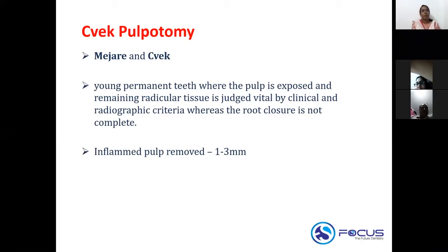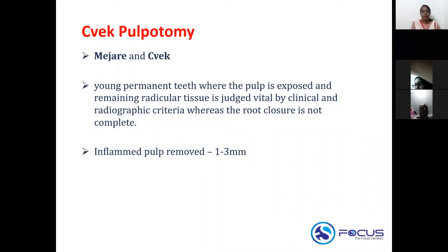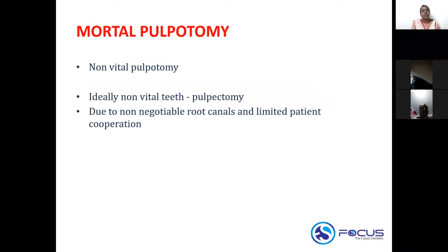It is said that even up to around 7 to 14 days post-trauma you can go ahead with the Sweg pulpotomy. Sweg pulpotomy means only a partial pulpotomy — you are removing only a small portion of the pulp. The amount of pulp removed in a Sweg pulpotomy is 1 to 3 millimeters. It is done in a young permanent tooth with an open apex following recent trauma where the tooth is judged vital with only minimal exposure.